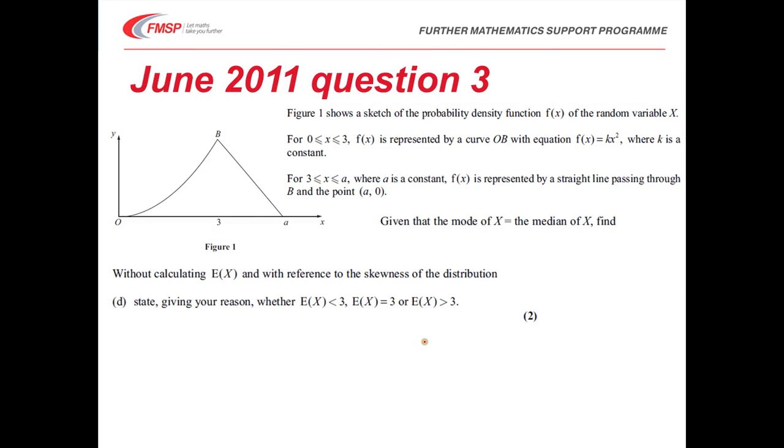So without calculating E(X), and with reference to the skewness of the distribution, state whether the mean is less than 3, equal to 3, or greater than 3. We're not expected to calculate this. But what I do know is that a equals 5. So this distribution effectively has some idea of negative skew.